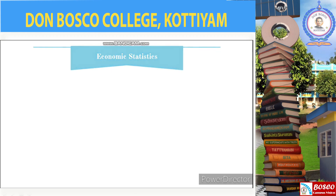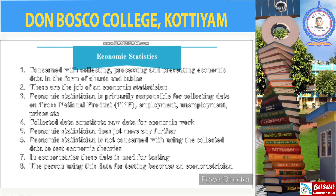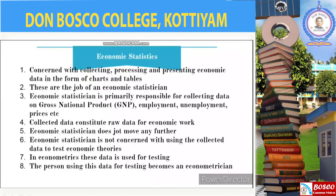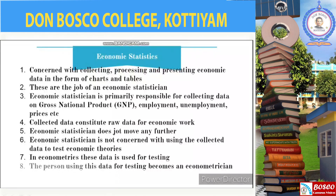Economic statistics is mainly concerned with collecting, processing, and presenting economic data in the form of charts and tables. The primary responsibility of an economic statistician is to collect data on gross national product, employment, unemployment, prices, etc., and the data so collected constitute the raw data for econometric work. However, an economic statistician does not go further — he is not concerned with using the collected data to test economic theories. In econometrics, these data will be used to test economic theories, and the person who tests the theories is known as an econometrician.